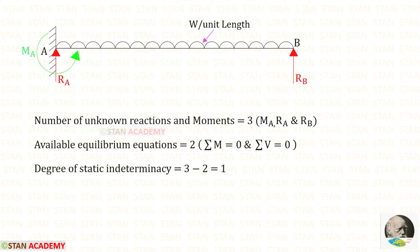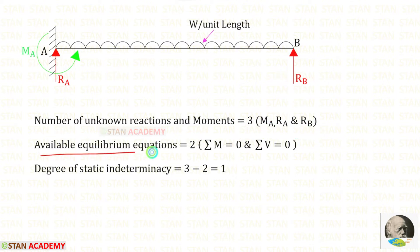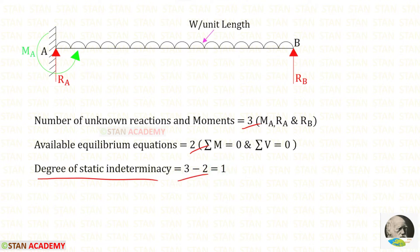Now let us find the degree of static indeterminacy. In this beam the number of unknown reactions and moments are 3: they are MA, RA, and RB. The available equilibrium equations are 2. The degree of static indeterminacy is equal to 3 minus 2, which gives 1. To make this beam statically determinate, we have to remove any one of these. Let us release RB.